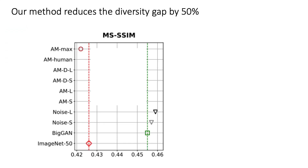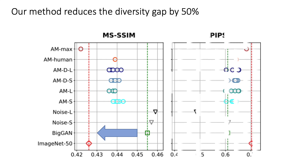The sample diversity gap between the original BigGAN samples (green line) and the real data (red line) is reduced by 50% using our method. This conclusion remains similar on both MSSSIM and LPIPS metrics.